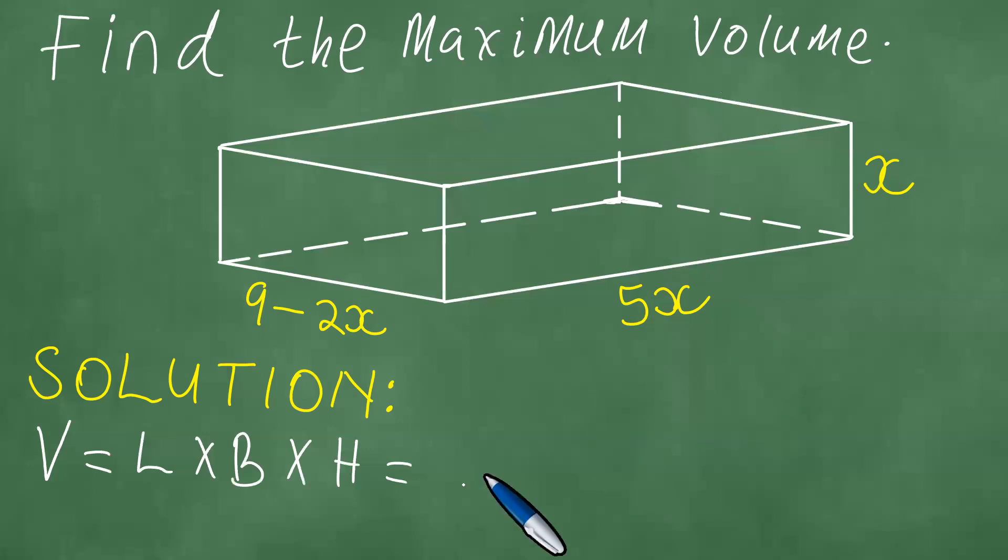The length at this point is 5x, the breadth is 9 minus 2x, and the height is x.